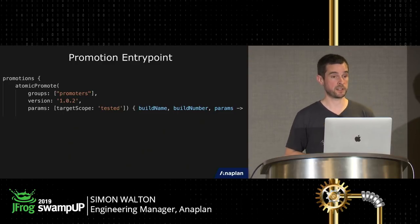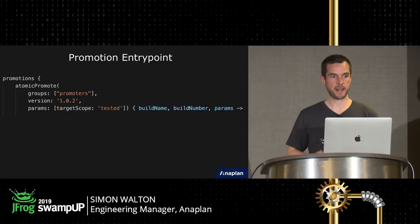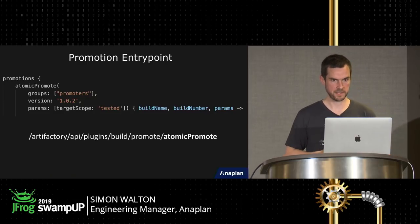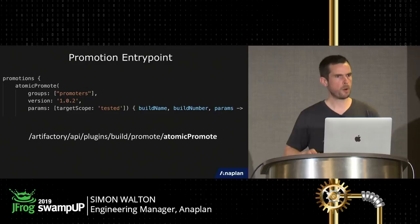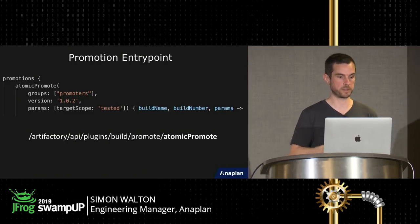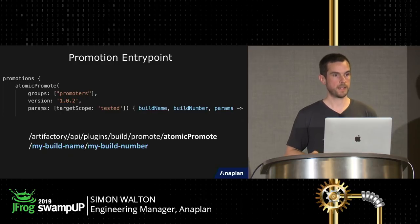As is standard when you execute a build promotion in Artifactory, you have the build name and build number. This is how we actually call it via the REST endpoint: as an authenticated user, you call `/artifactory/api/plugins/build/promote/atomicPromote` — the name matching the function inside the promotions block — and you give it the build name and build number. These link to the build name and number you see in the closure parameters.